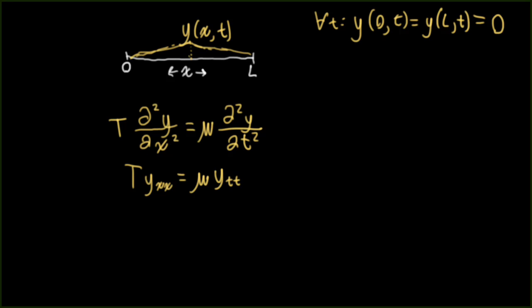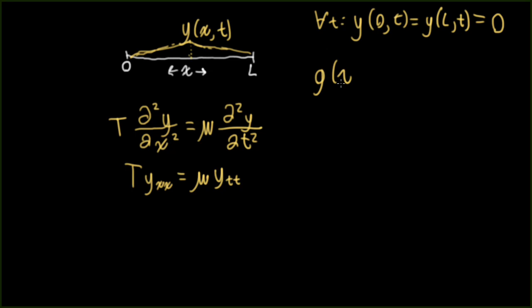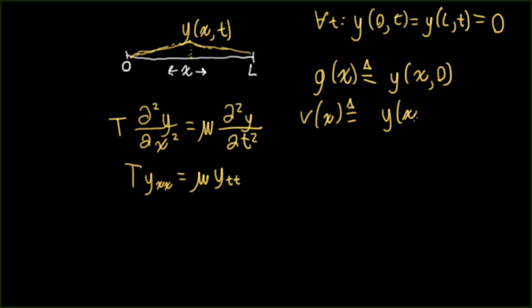We also need some initial conditions. Let's define g(x) as the position of the string at time t = 0, so y(x, 0). And let v(x) be defined as the velocity of the string, which is the derivative of y(x, t) with respect to t evaluated at t = 0. I like to be explicit about that rather than just putting a zero in, because it can be confusing.